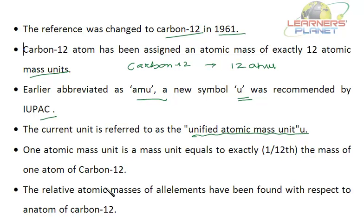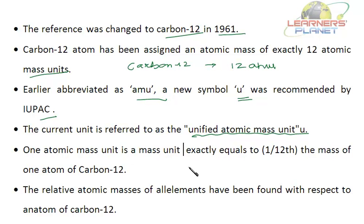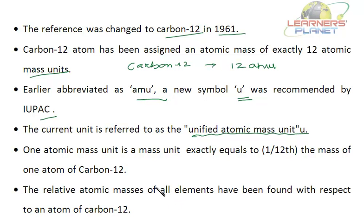One atomic mass unit is the mass unit exactly equal to 1/12th the mass of one carbon-12 atom. The relative atomic masses of all elements have been found with respect to one atom of carbon-12.